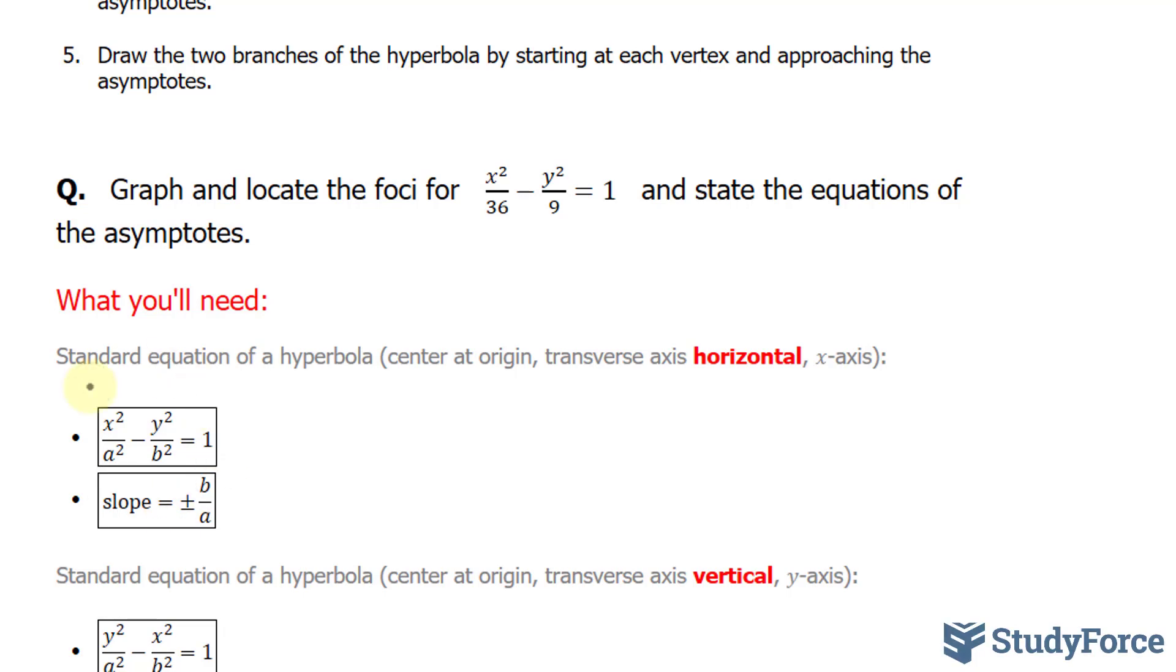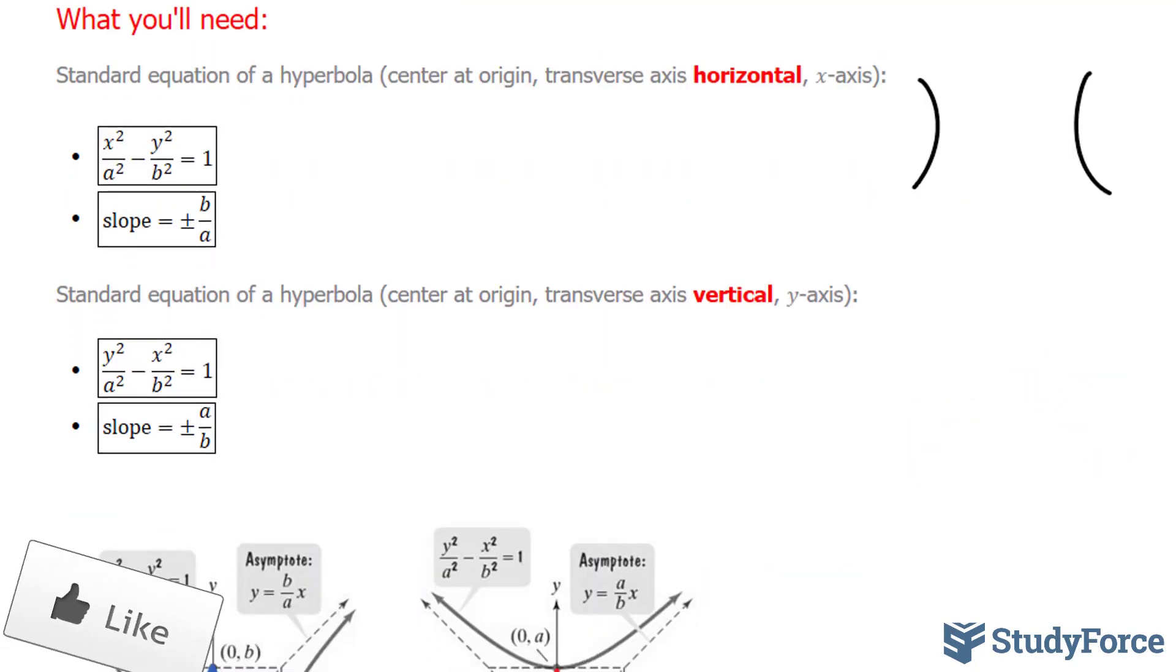What I mean by a transverse axis being horizontal, meaning that it opens like this. Similarly, the standard equation of a hyperbola whose transverse axis is vertical, meaning that it opens like this, looks like the following.